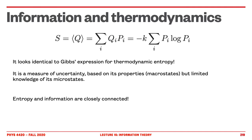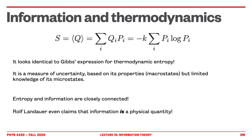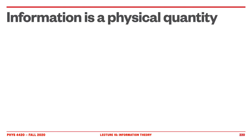Entropy and information are closely connected. Rolf Landauer made the important claim that information is a physical quantity. This provides the connection between thermodynamics and statistical physics — on one side from thermodynamics using the Clausius inequality, and on the other from statistical physics. The amount of information that we get is a physical quantity.